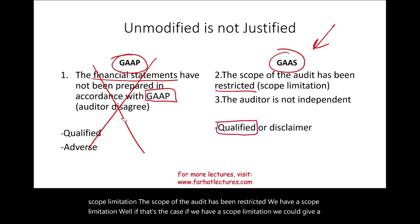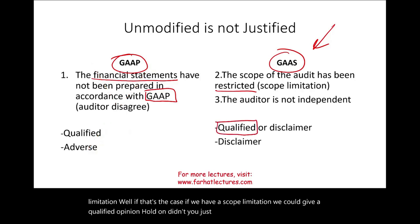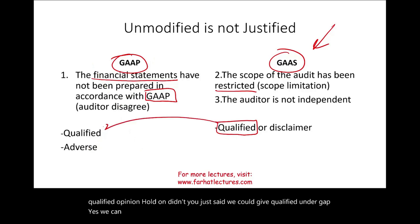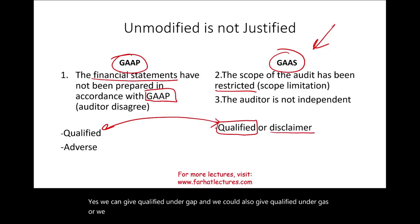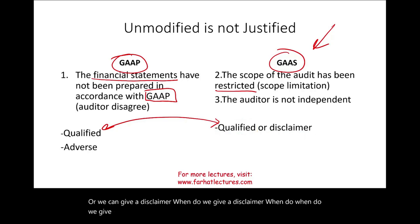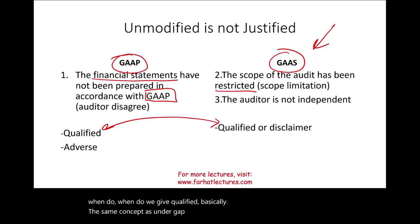If we have a scope limitation, we could give a qualified opinion. We can give qualified under GAAP and we can also give qualified under GAAS. Or we can give a disclaimer. When do we give a disclaimer versus a qualified opinion? Basically, the same concept applies — it depends on the severity and pervasiveness of the issue, whether under GAAP or GAAS. We'll discuss this in detail.